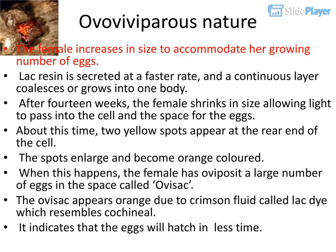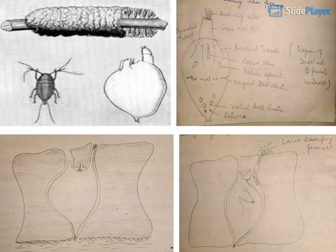The female increases in size to accommodate her growing number of eggs, and LAK resin is secreted at a faster rate, forming a continuous coalesced layer. After 14 weeks, the female shrinks in size allowing light into the cell and space for the eggs. About this time, two yellow spots appear at the rear end of the cell, which enlarge and become orange-colored. The female has oviposited a large number of eggs in the space called the oversack. The oversack appears orange due to crimson fluid called Lacti, which resembles cochineal, indicating that the eggs will hatch soon.